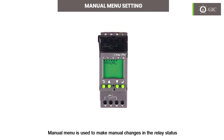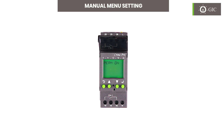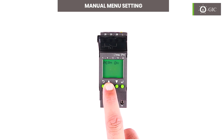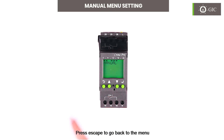The Manual menu is used to make manual changes in the relay status. The user can set from two available channels using the up and down keys, and press enter to confirm. There are three modes in the manual menu: Permanent ON, Permanent OFF, and Override ON/OFF. Press ESC to go back to the menu.